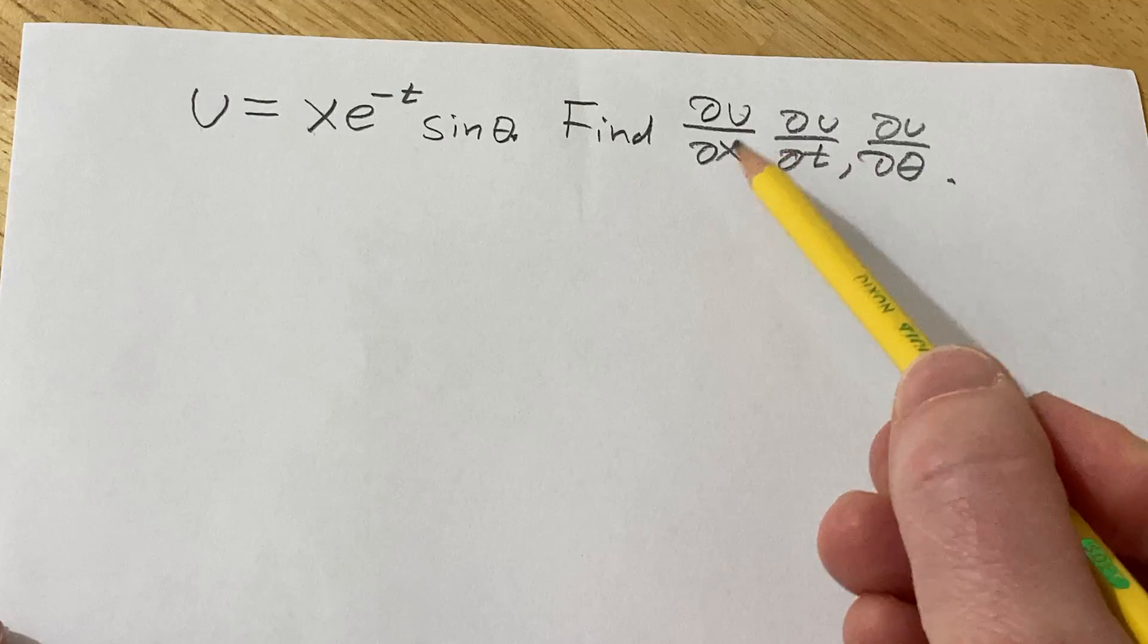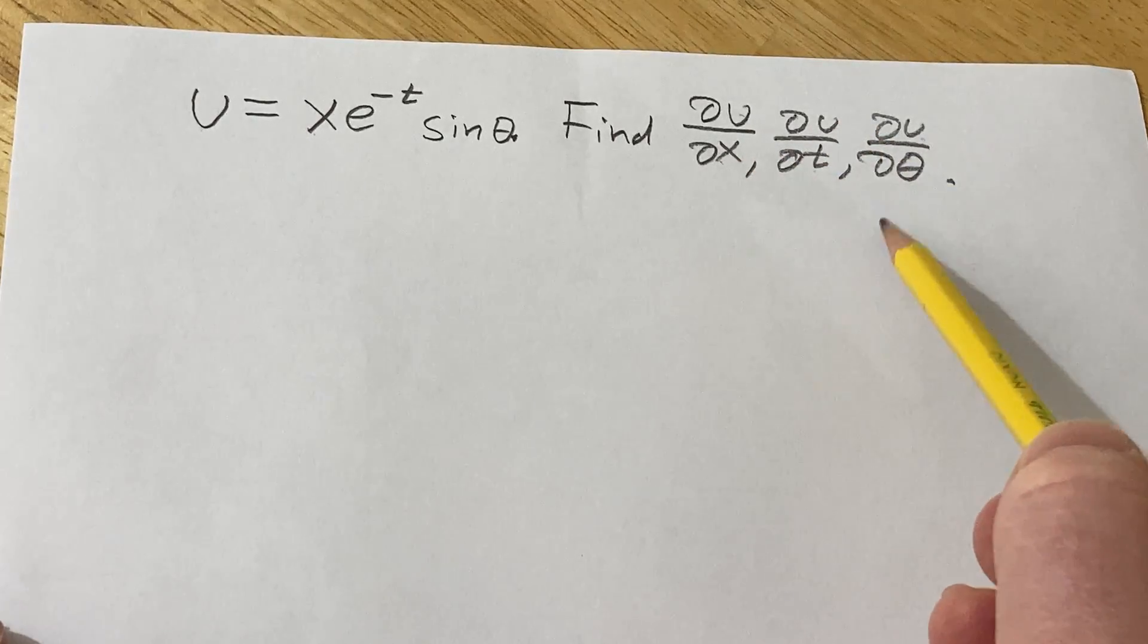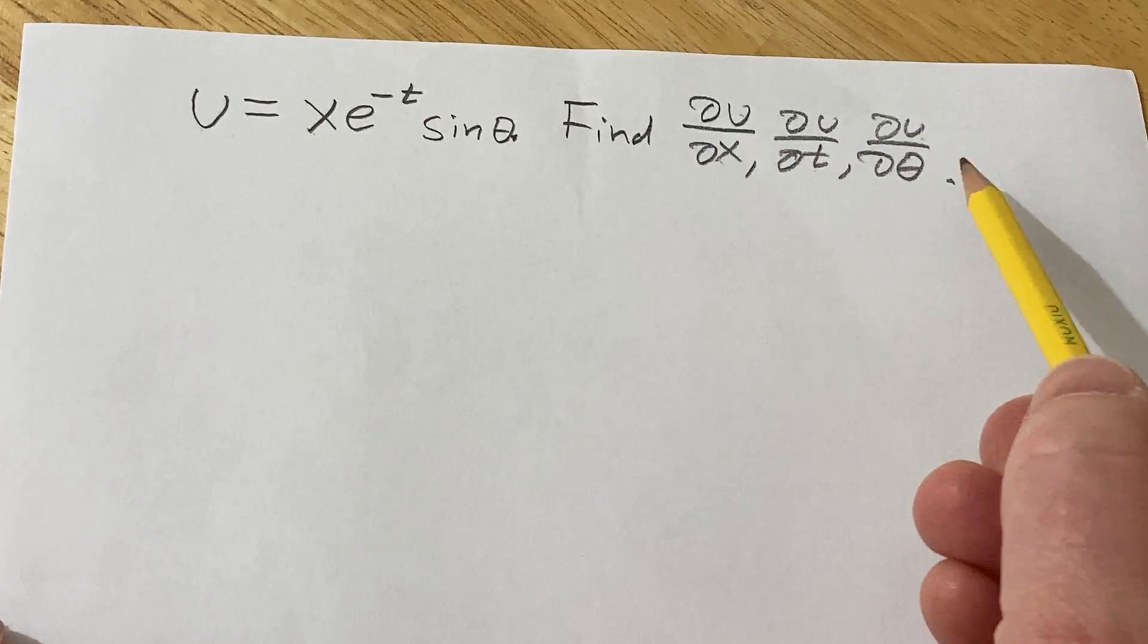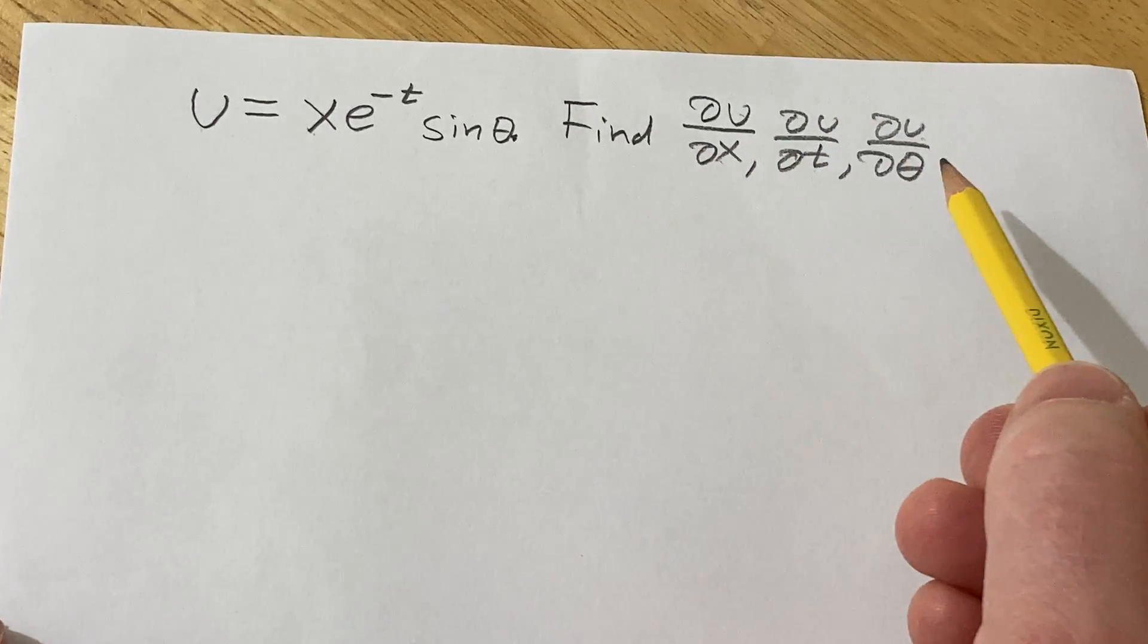So we're going to find ∂u/∂x, ∂u/∂t, and ∂u/∂θ. So the key thing with partial derivatives is when you're computing them, you want to treat all of the other variables as constants.